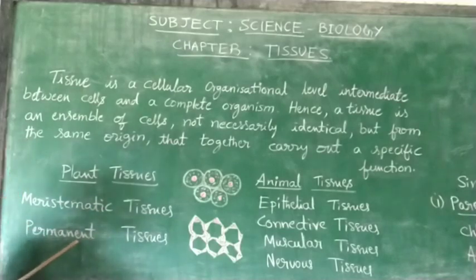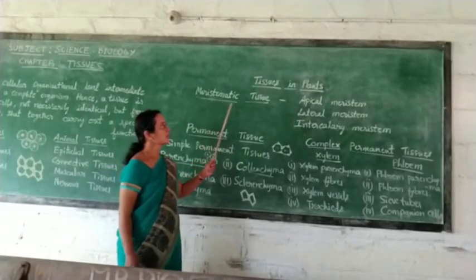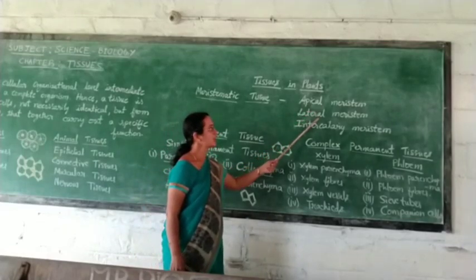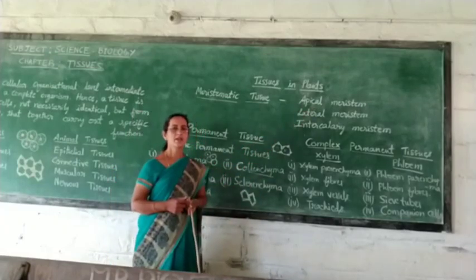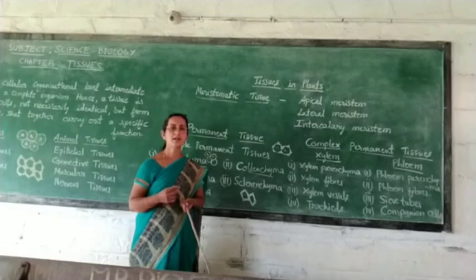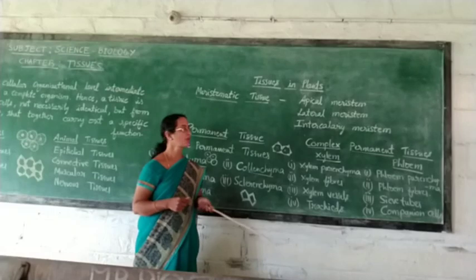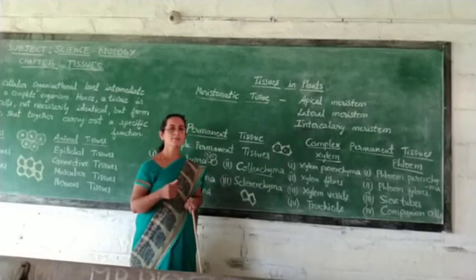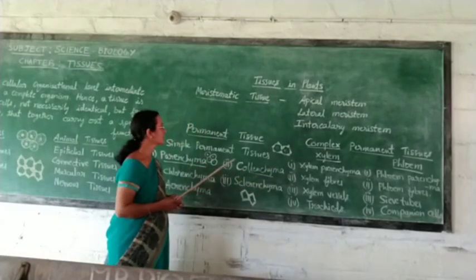Those cells transform to form the permanent tissues. Meristematic tissues are of three types: apical meristem, lateral meristem, and intercalary meristem. Apical meristem is seen at the growing tips of the plants where they have high power of cell division, helping in increasing the length of the plant. Lateral meristem is seen at the lateral parts of the plant like branches, and helps in increasing the thickness of the plant. Intercalary meristem is seen in between the stem and helps in increasing the length of the shoot system.